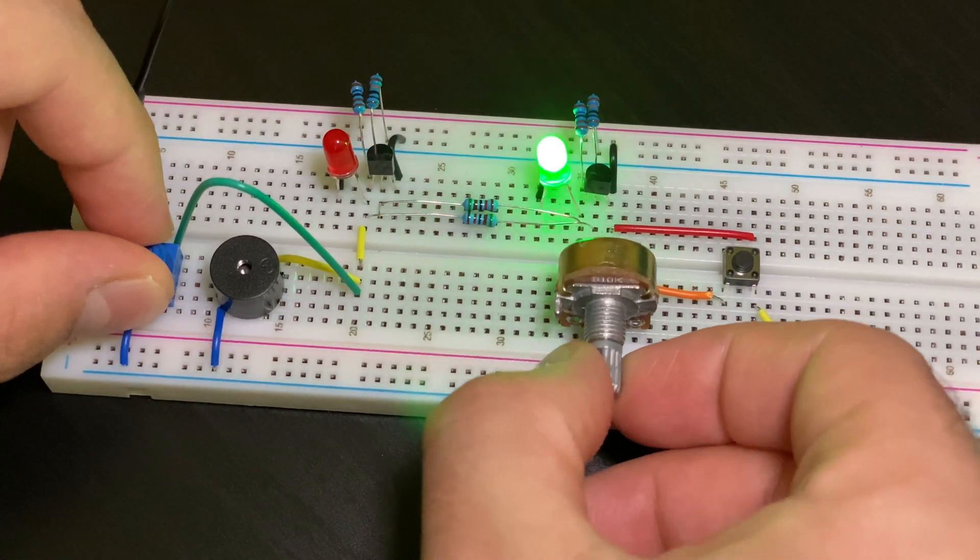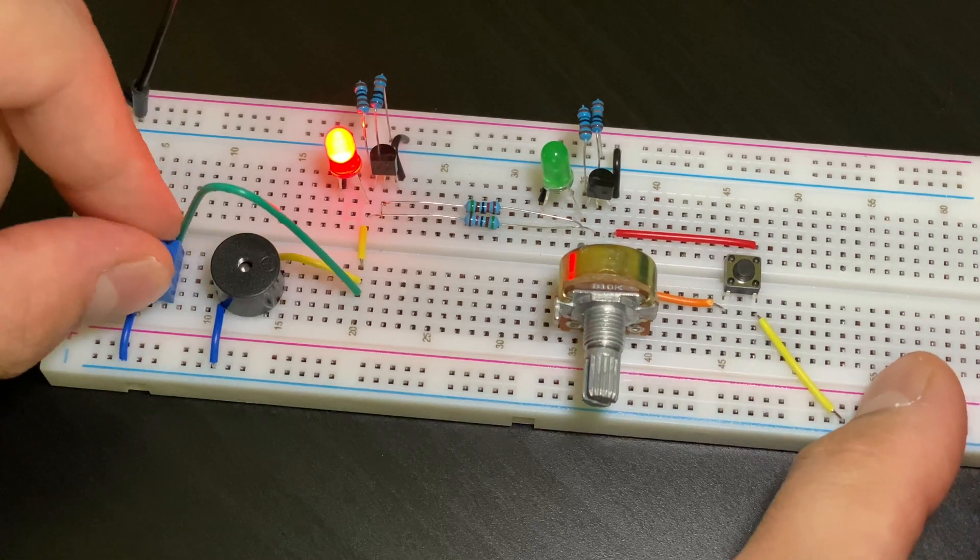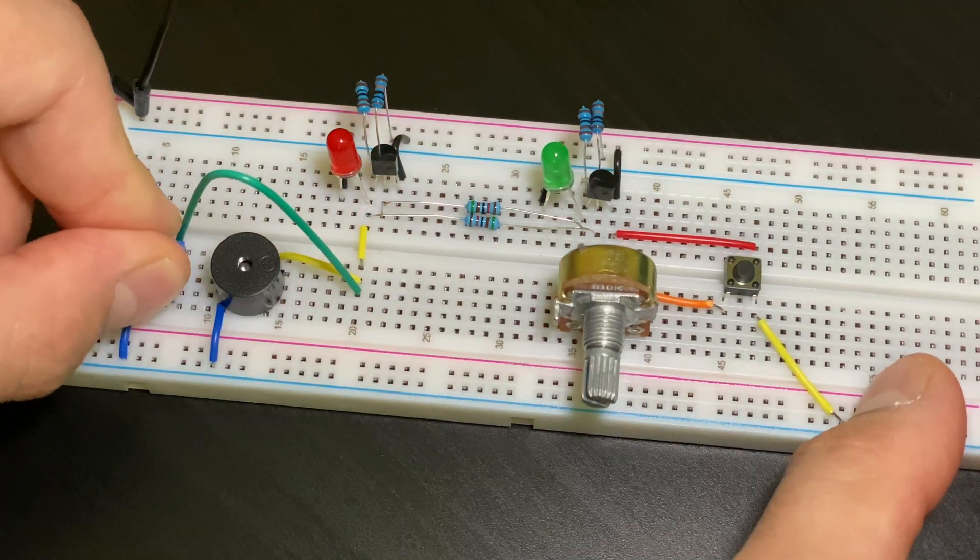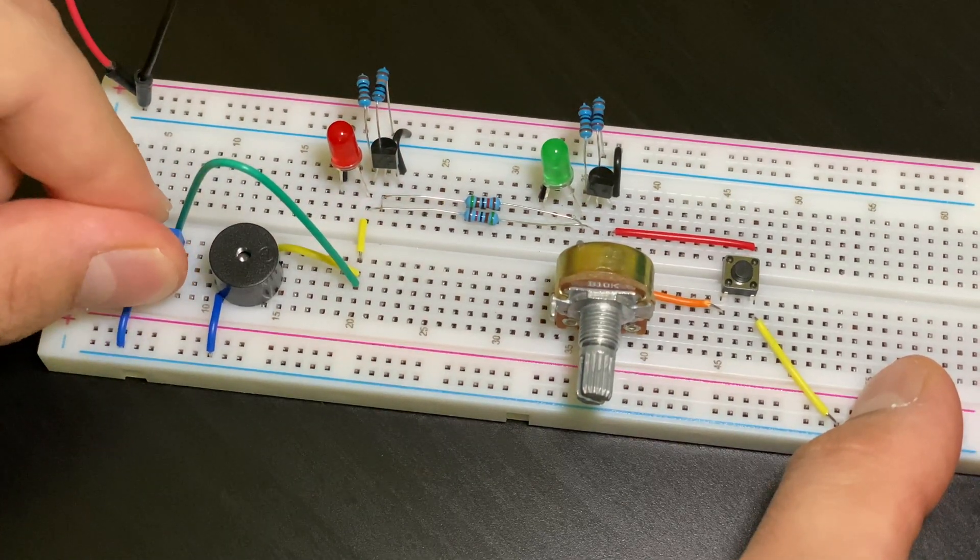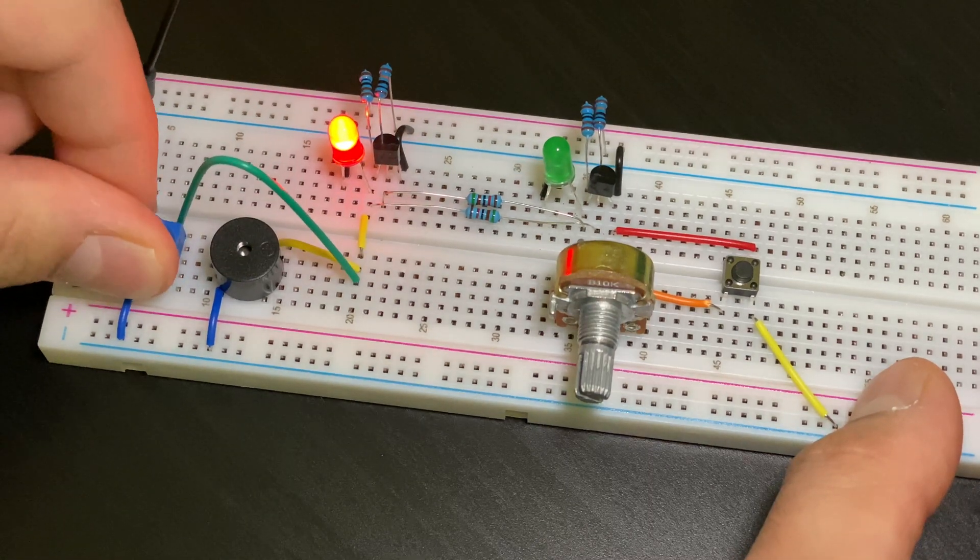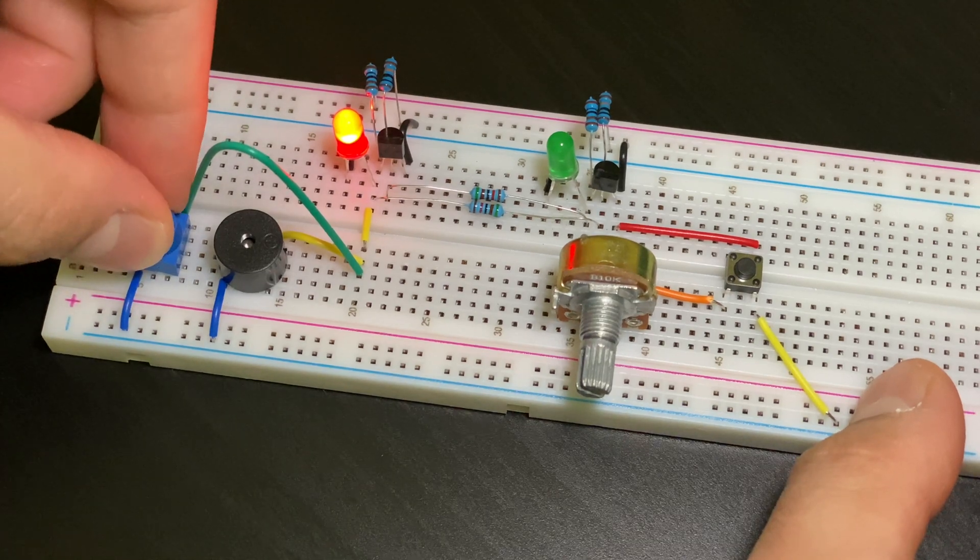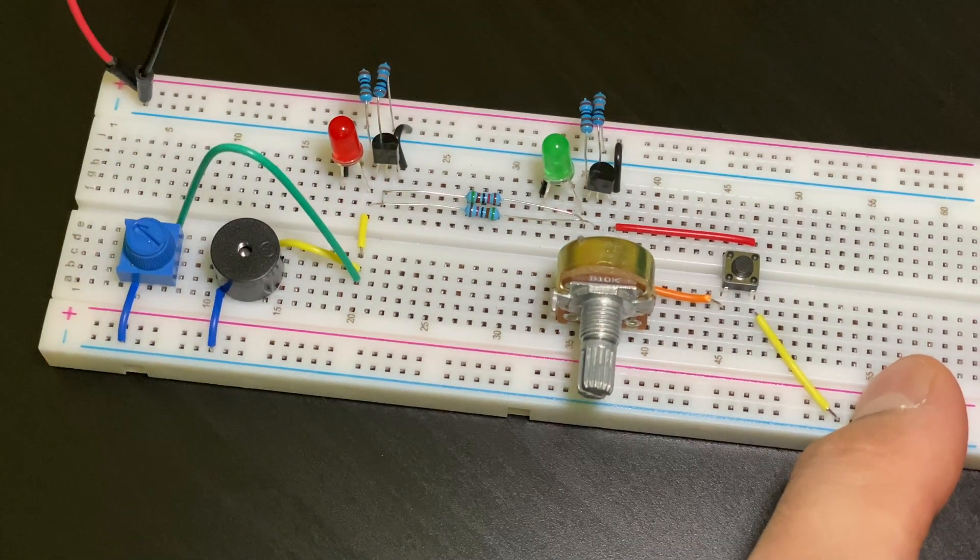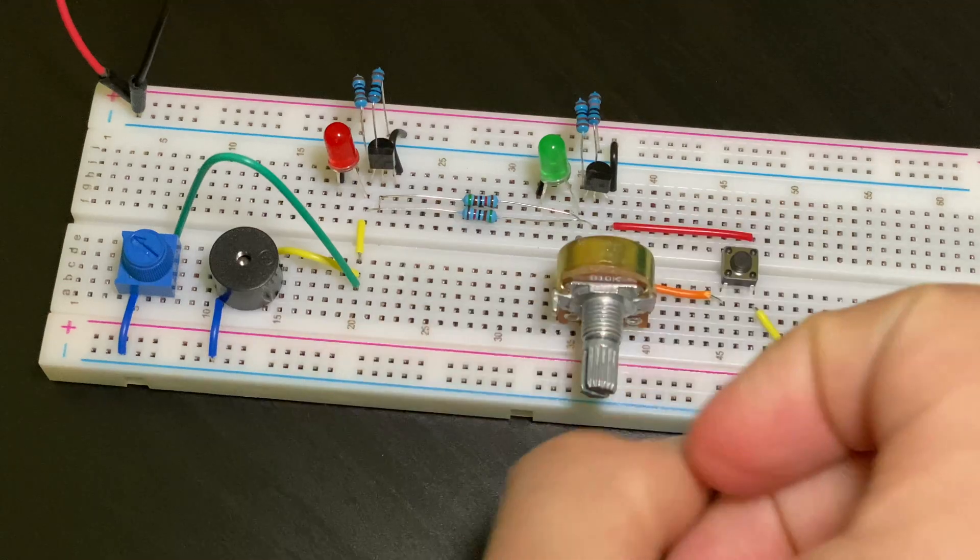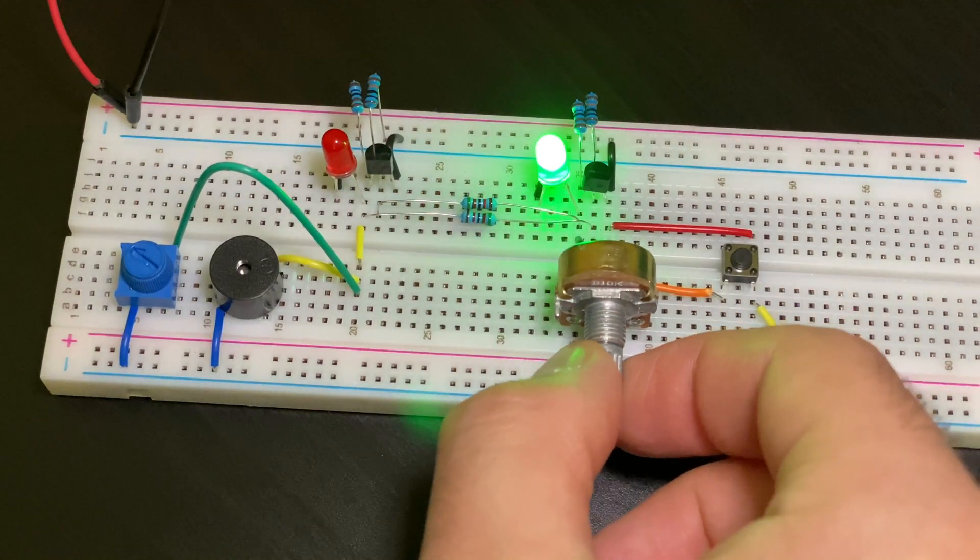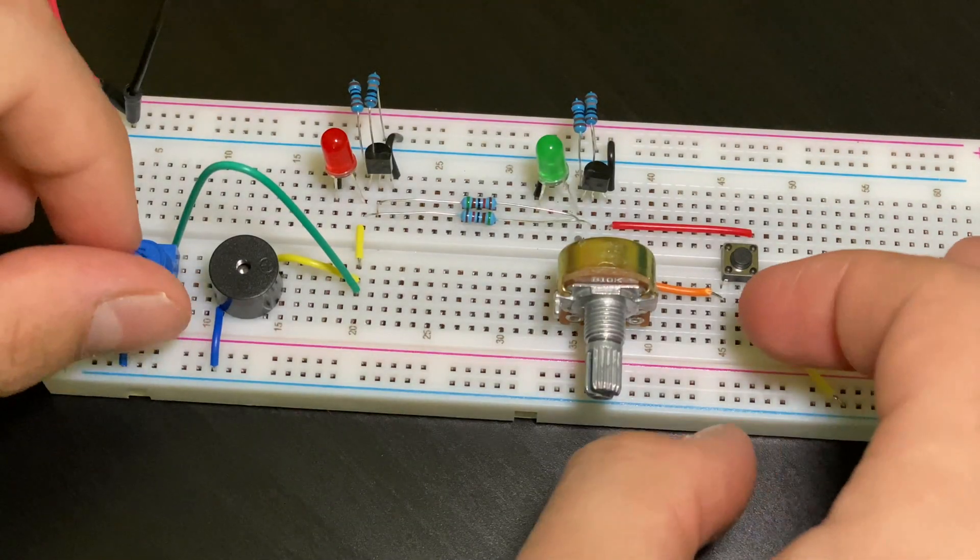So if I turn this dial, you can see that the red light adjusts and so does the sound. And the beauty is that I could completely turn it off. And while that's turned off, I could separately control the green LED. More on the function in a bit.